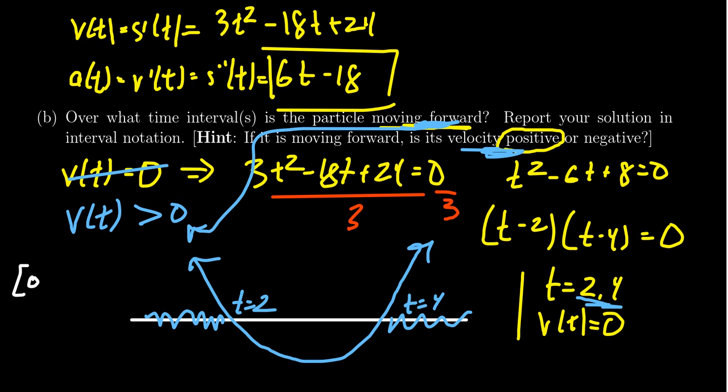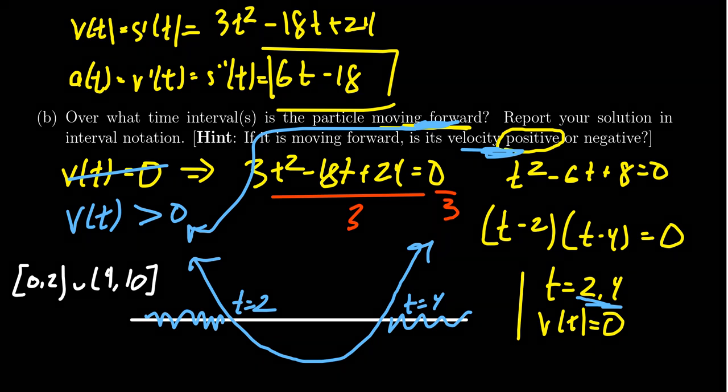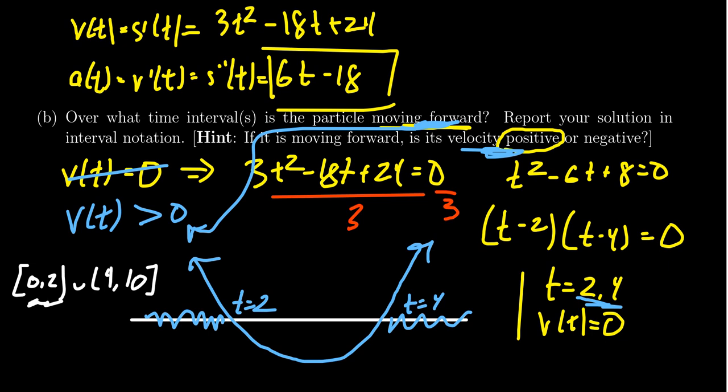Then recording our answer, we're going to get 0 to 2 union 4 to 10. Why do we get this? We want things less than 2, but our model is only valid between 0 and 10 seconds. So we wouldn't go from negative infinity to 2, we'd only go from 0 to 2. So it's moving forward then. And then it's also moving forward from 4 to 10. 10 and 0 are included, we get the brackets there. 2 and 4 are not included because at the moment 2 seconds and 4 seconds, the velocity is 0. So it's neither moving forward nor moving back. So the correct answer would be the interval 0 to 2 union 4 to 10, where 0 and 10 are included and 2 to 4 are excluded.